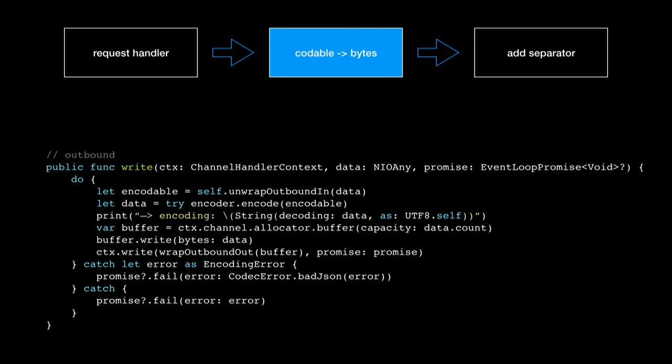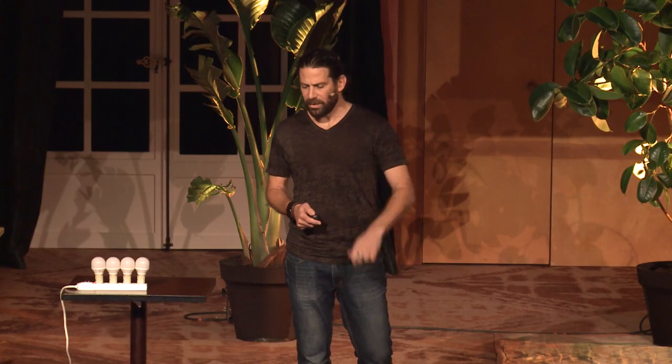The next handler is pretty simple — it uses Foundation's codable concept. Because the request object is a codable, we call encode on it. If there's an exception because we sent the wrong type of data, we can send an error back. Otherwise, we take the bytes that the encoder gave us and again call write, passing the baton to the next handler.